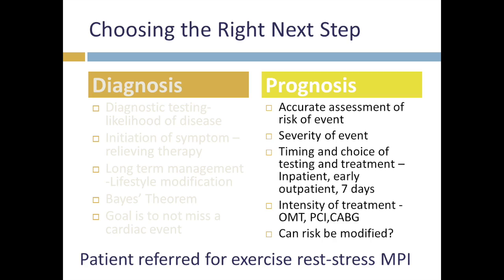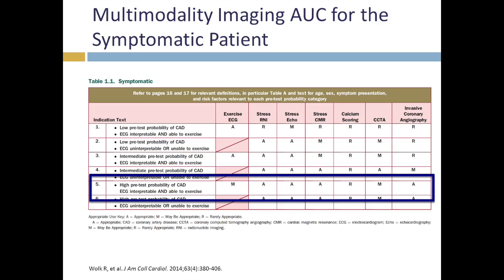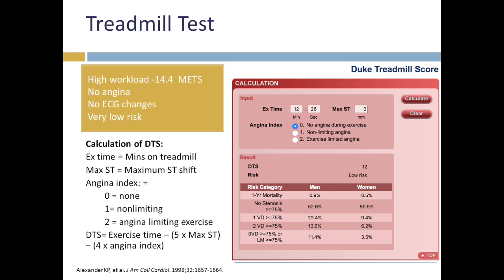In this case, the patient was referred for exercise rest-stress myocardial perfusion imaging. The multimodality imaging appropriate use criteria for the symptomatic patient indicate that stress radionuclide imaging, stress echo, and stress CMR would all be considered appropriate. Under certain circumstances, coronary angiography would also be appropriate, to be determined based on discussion between the clinician and the patient.